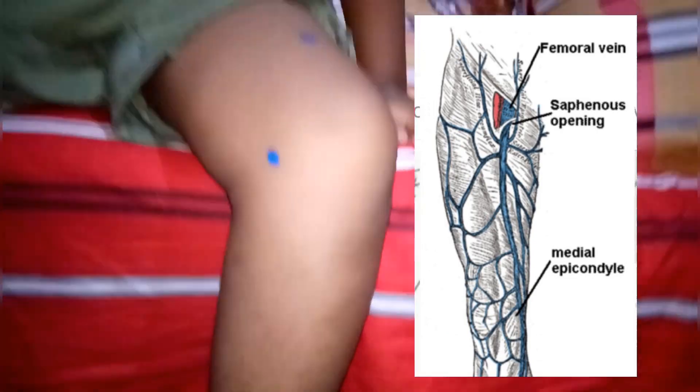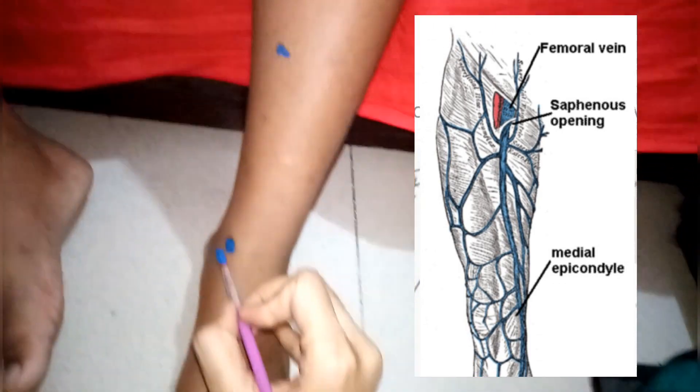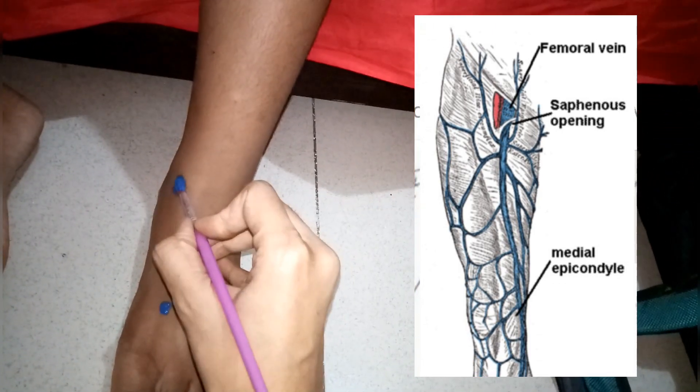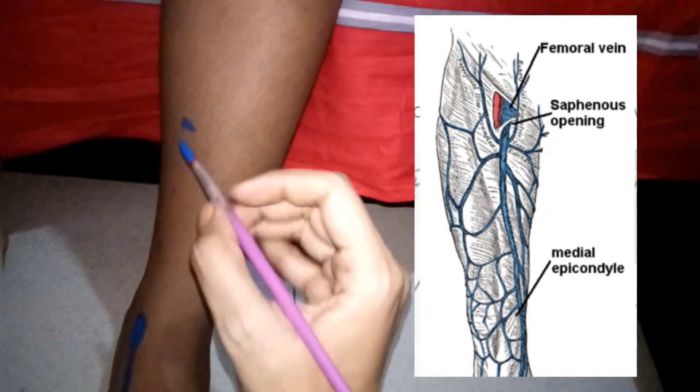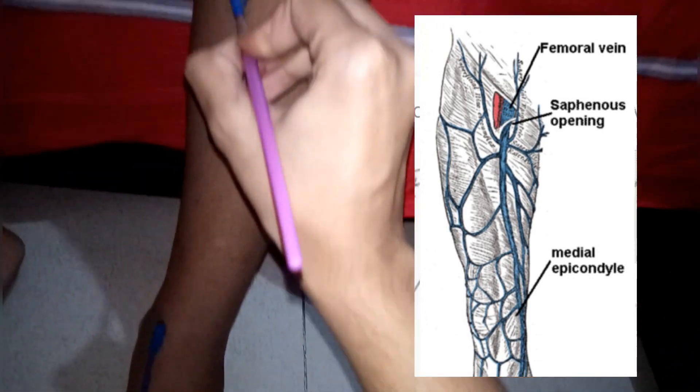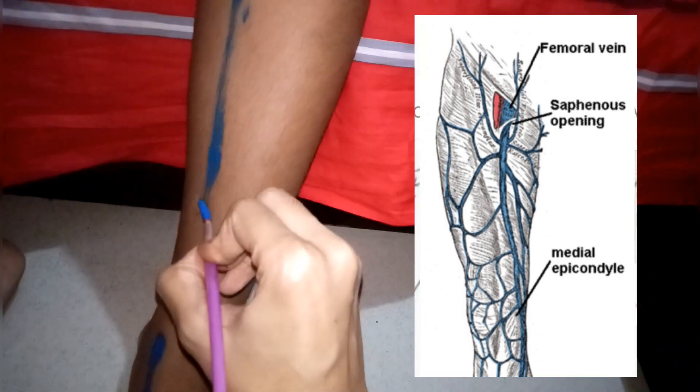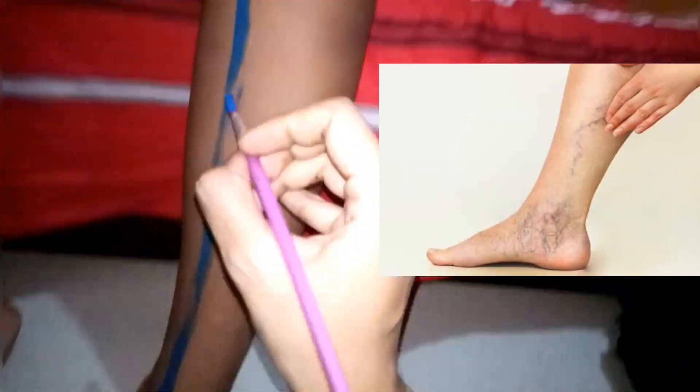Connecting all these points, the great saphenous vein passes through the saphenous opening by piercing the cribriform fascia, and finally, below the middle of the inguinal ligament, it drains into the femoral vein after piercing the femoral sheath. If the valves of this vein become incompetent, the vein will be dilated and tortuous, leading to varicose vein and varicose ulcer. Varicose vein is elongated, tortuous, and has a larger diameter than normal.